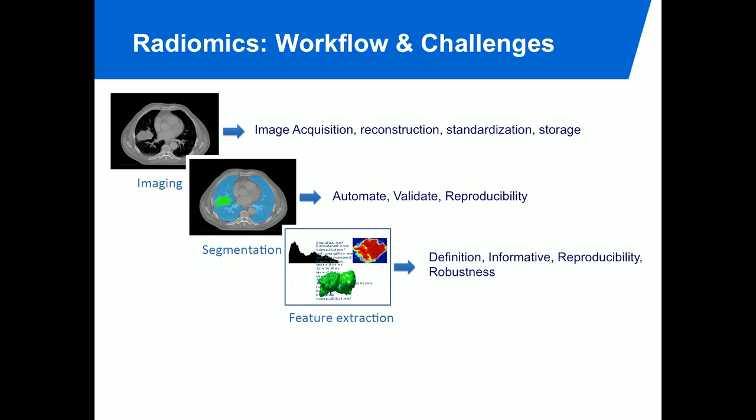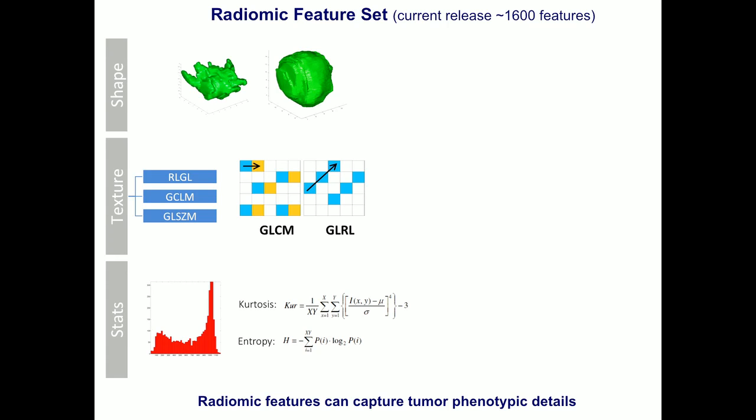Looking at features: once we have an image and a segmentation, we want to extract informative features, define them, check reproducibility and robustness. We capture shape-based differences like sphericity or roundness, but also more advanced features like looking at frequencies on the surface of the tumor. The biggest group is textural features — developed by the AI and computer vision field — looking at similarities and differences between adjacent voxels. Even first-order statistics like entropy or range can often be very important features.